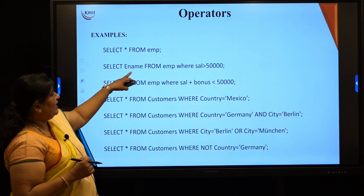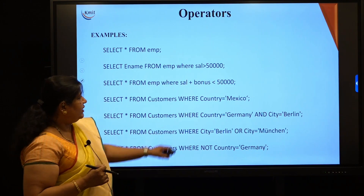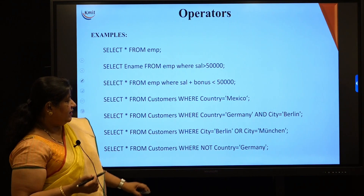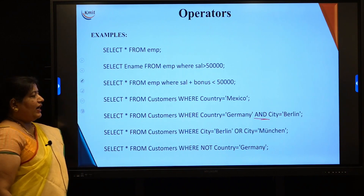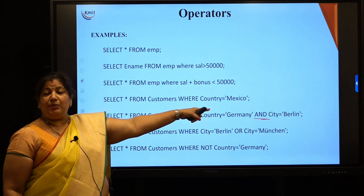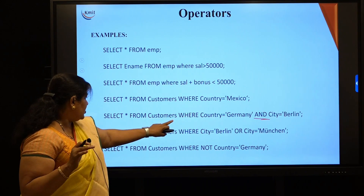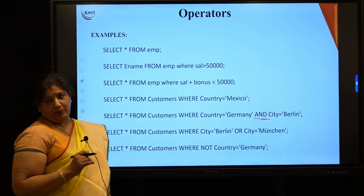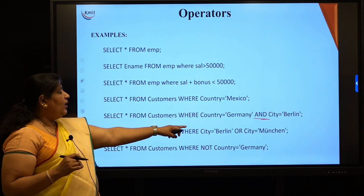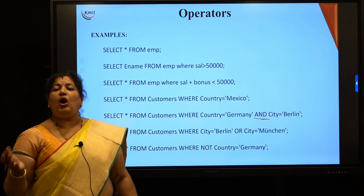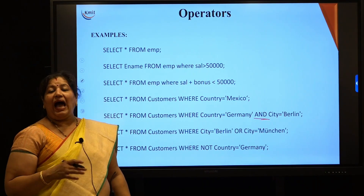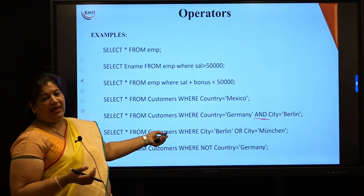Some examples: SELECT ename FROM EMP WHERE salary > 50000, or WHERE sal + bonus < 50000, or WHERE customer = 'Mexico'. Using comparison operators: WHERE country = 'Germany' AND city = 'Berlin' retrieves customers from Berlin only. Or using OR: city can be Berlin or Michigan. Using NOT: country != 'Germany' returns customers from any other country. Operators are used as per our requirement to frame the conditions.